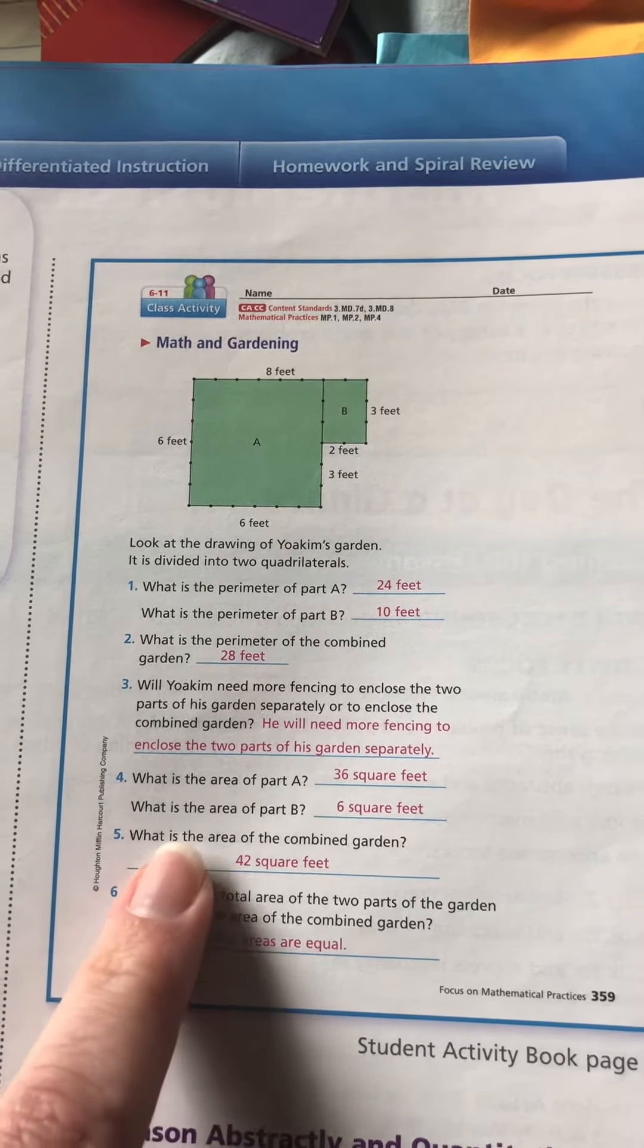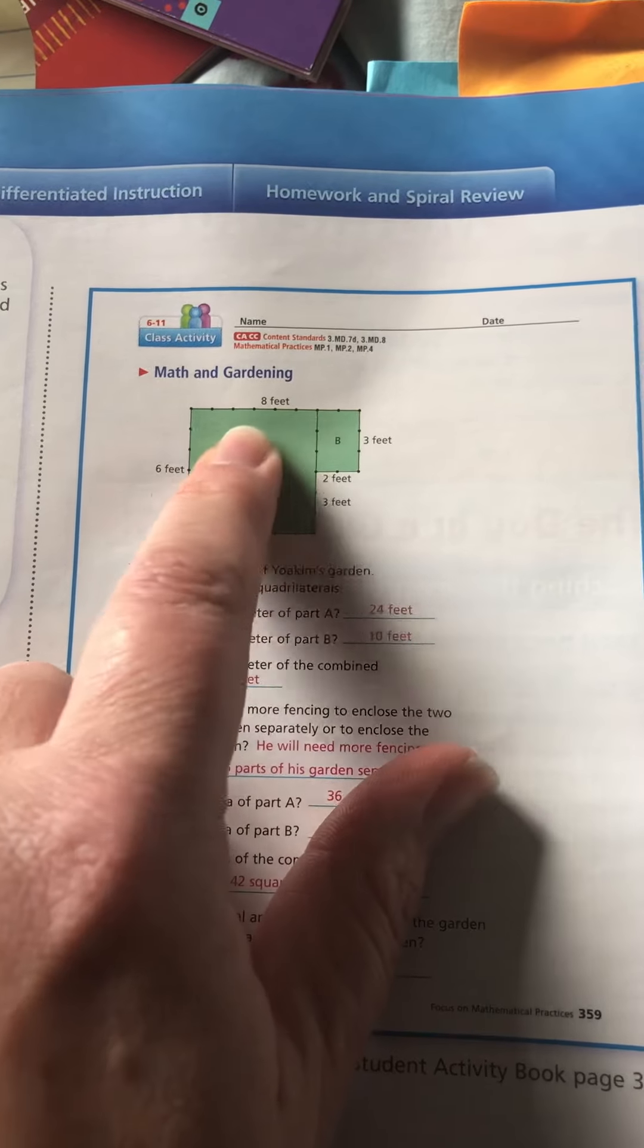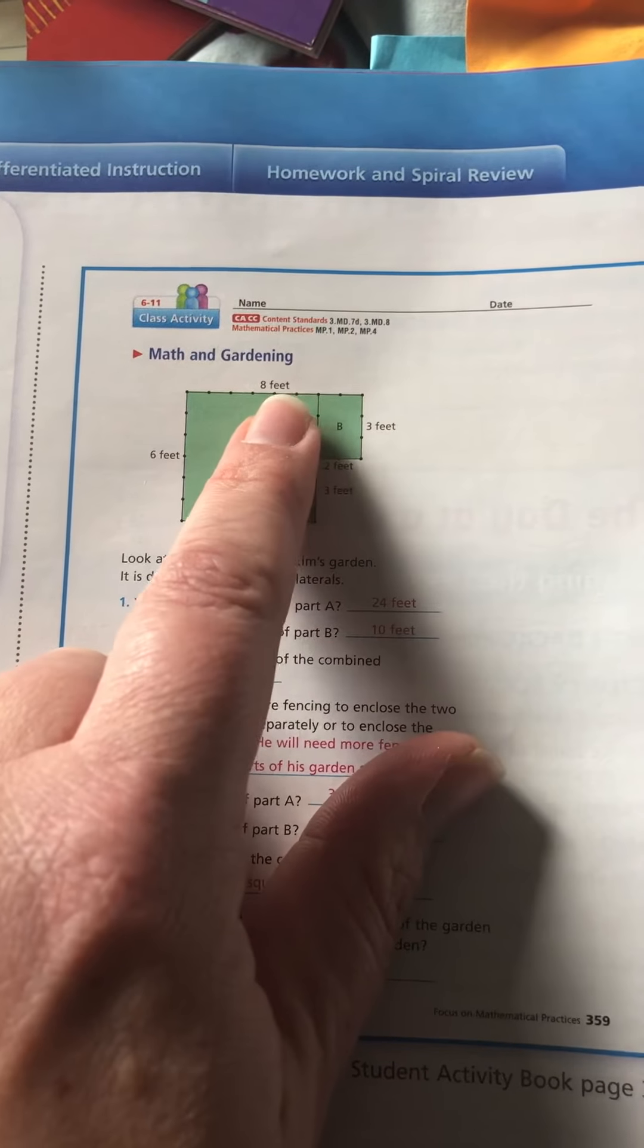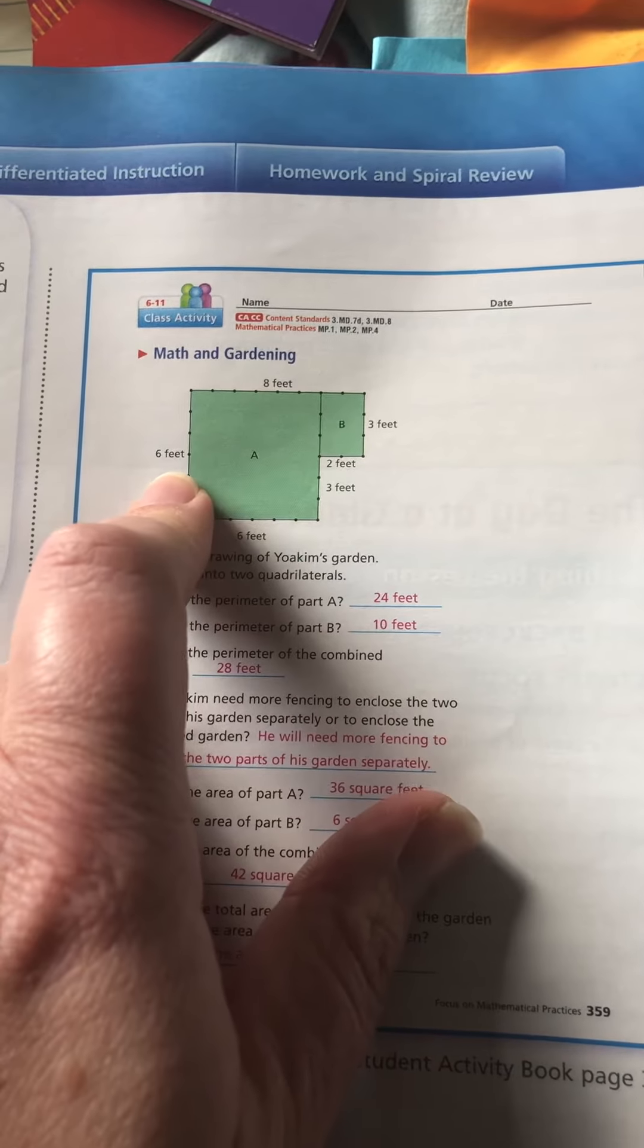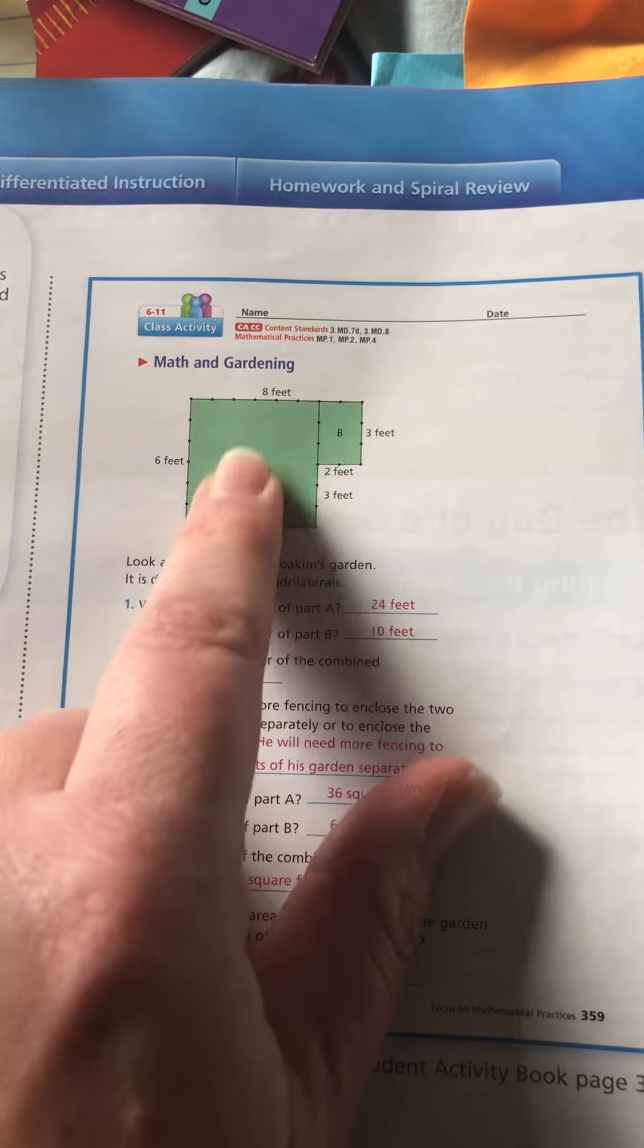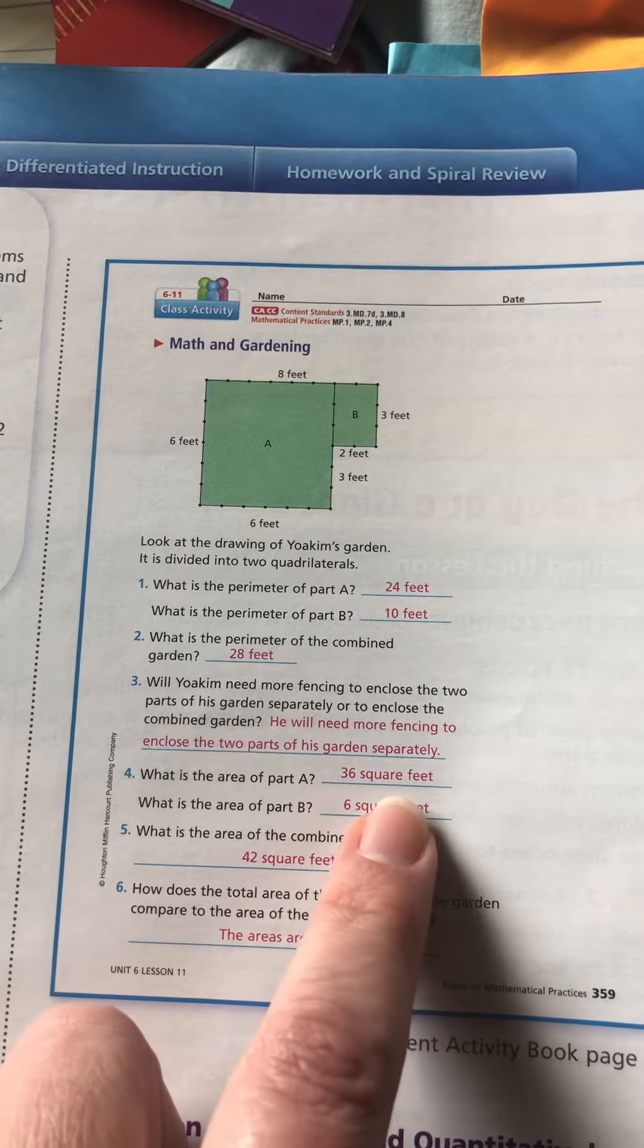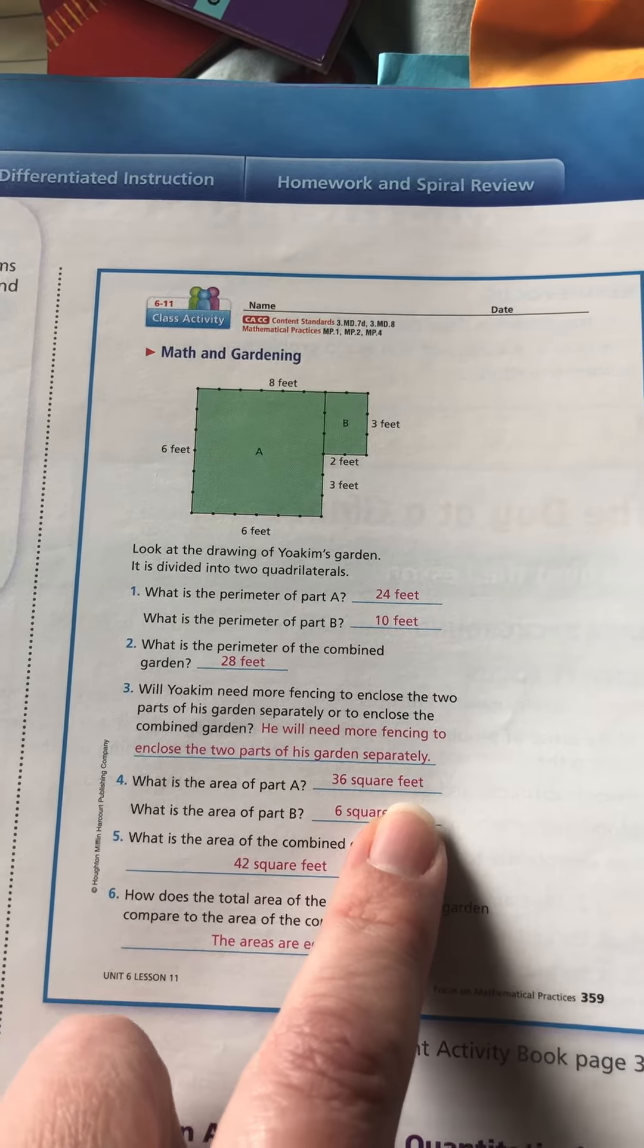The area of part A - again, a lot of students look at this eight feet, get confused, and go length times width, which would be eight times six. That's not correct because this is not the length here of this side. This is actually six by six, which would give you 36 square feet.